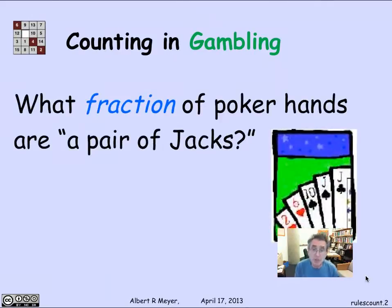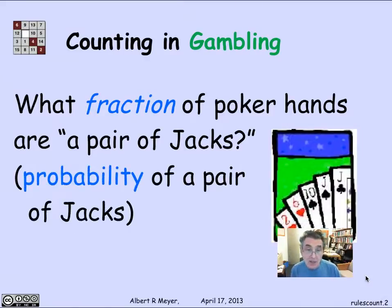A typical kind of question would be, if you know how poker works, there are various classifications of five-card hands in poker, and you might ask, what fraction of all possible five-card poker hands translate into being a pair of jacks? Basically, this fraction of total poker hands which fit into the category of a pair of jacks is the probability of a pair of jacks.